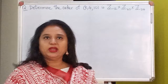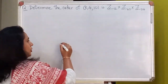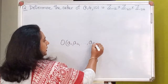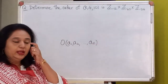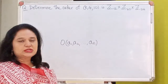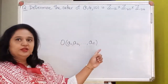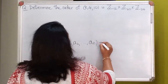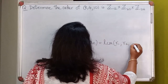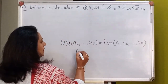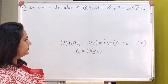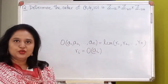Recall in the last lecture, we gave a formula for order of an element. So in the direct product, if I take an ordered n-tuple (a1, a2, ..., an), and if each one of these elements is of finite order in their respective groups, then the order of this element will also be finite and will be equal to LCM of r1, r2, ..., rn, where ri happens to be the order of the i-th element. So let's make use of this formula.